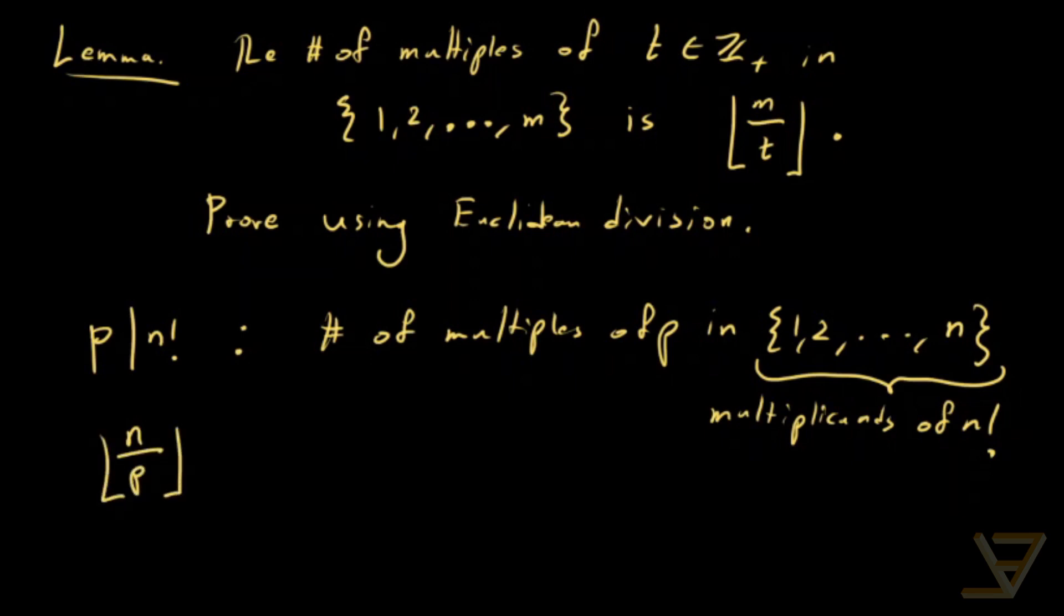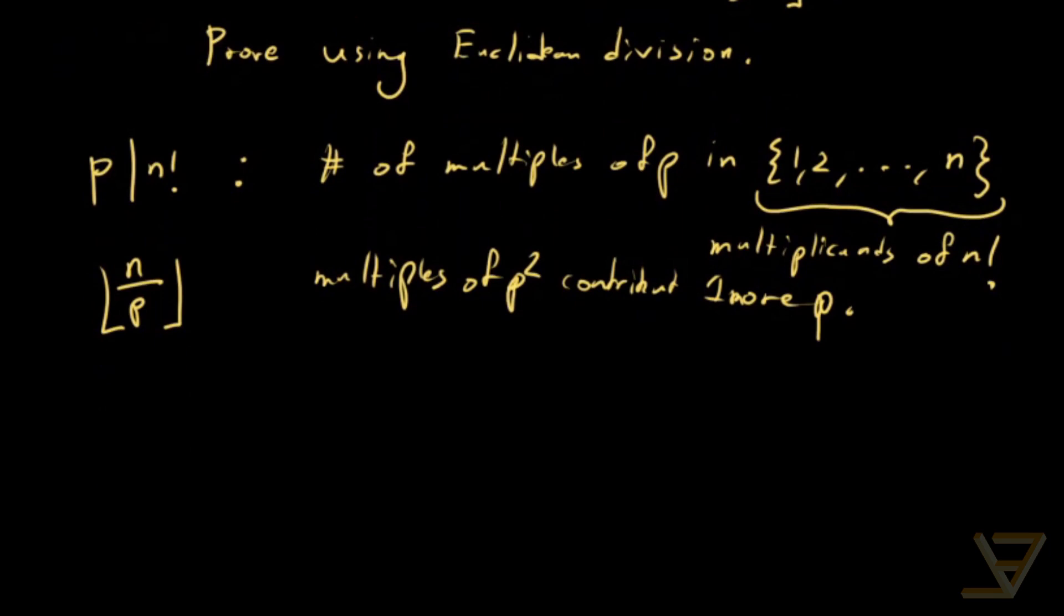But notice that the multiples of p squared contribute one more p. So that means we need to add the number of the multiples of p squared on top of this. So we get n over p floor function plus n over p squared floor function as a better approximation.